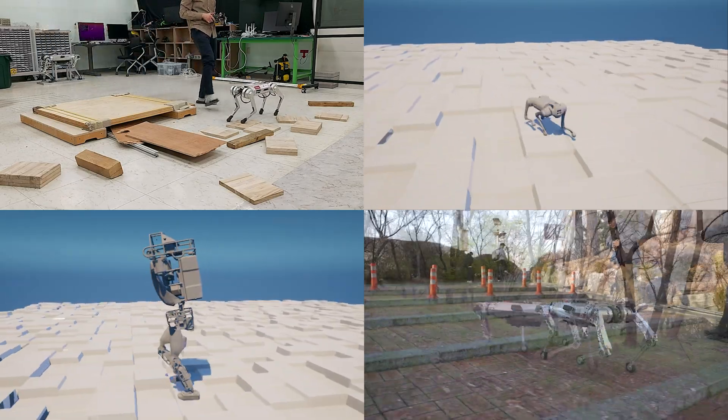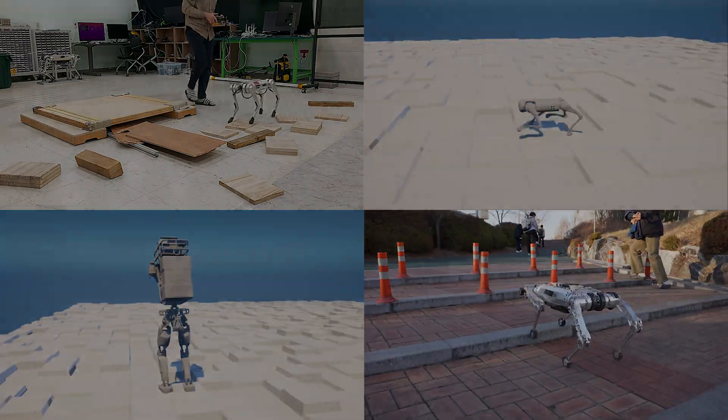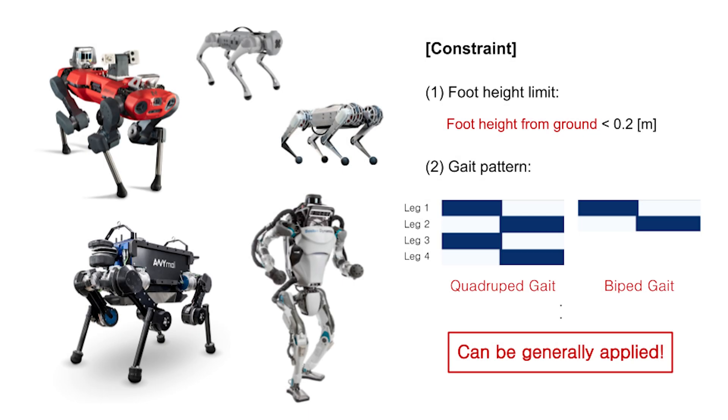So why do we also use constraints? First, constraints make the training pipeline more general across robot platforms. Constraints can be used as generalizable conditions that the controller should satisfy even when the robot changes.